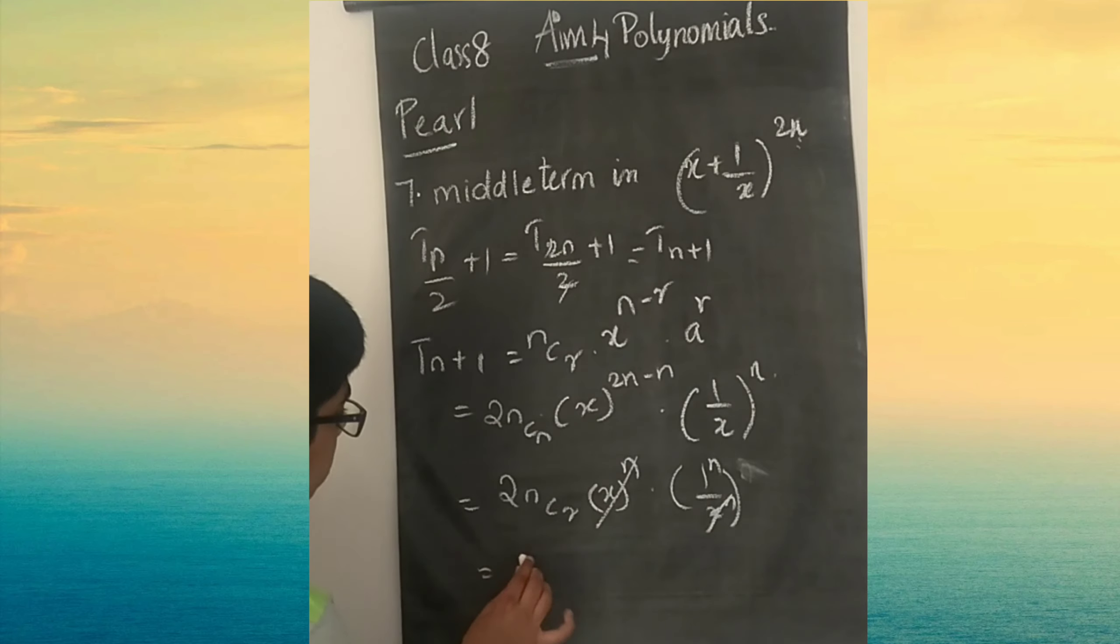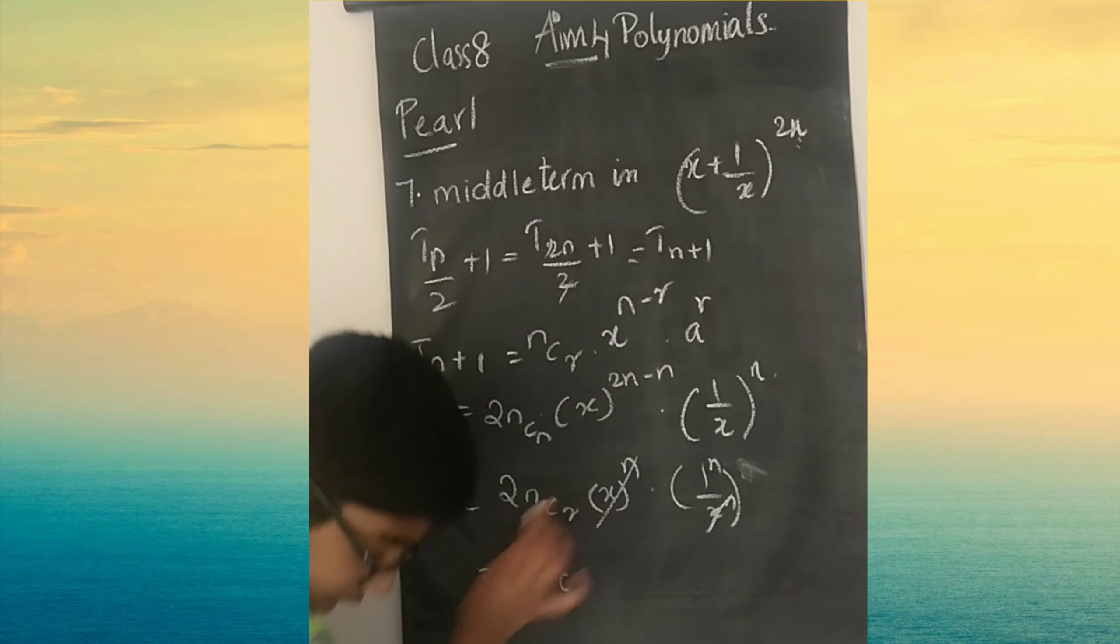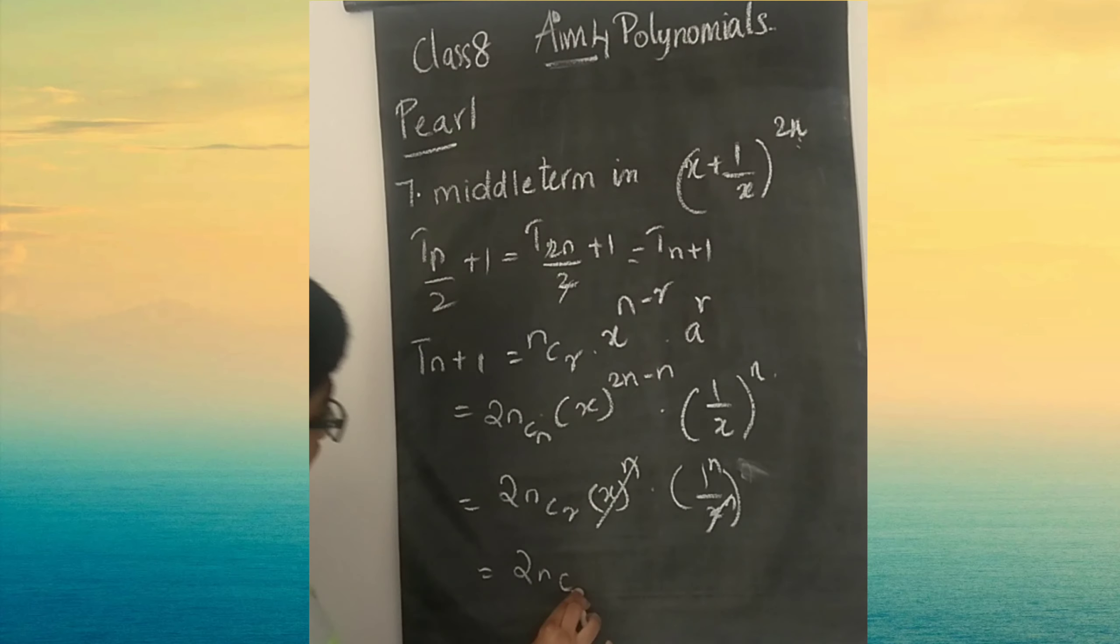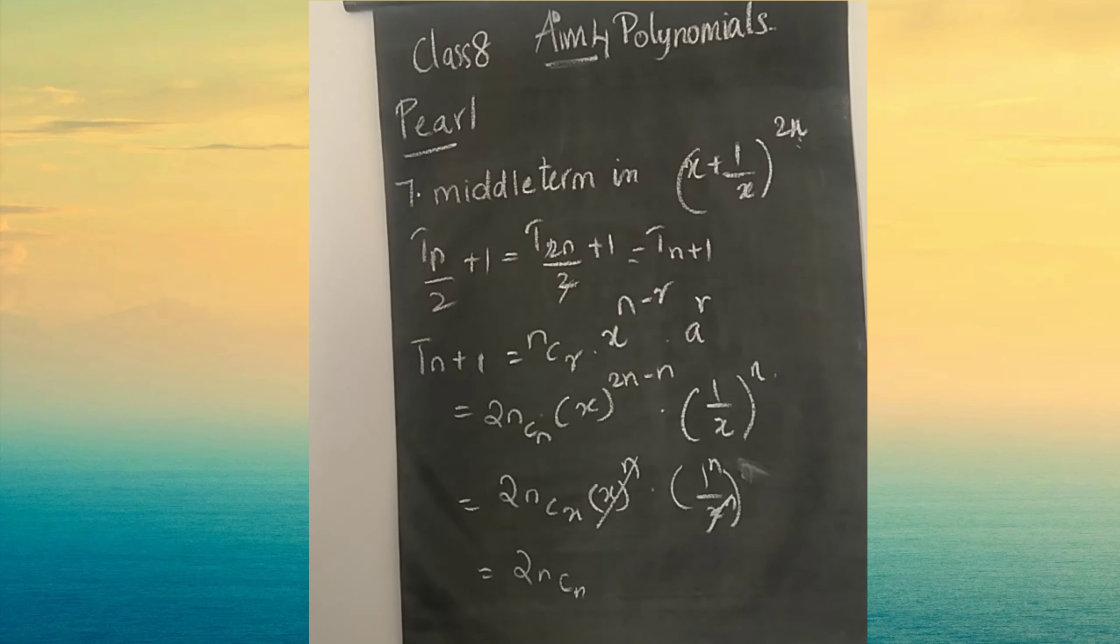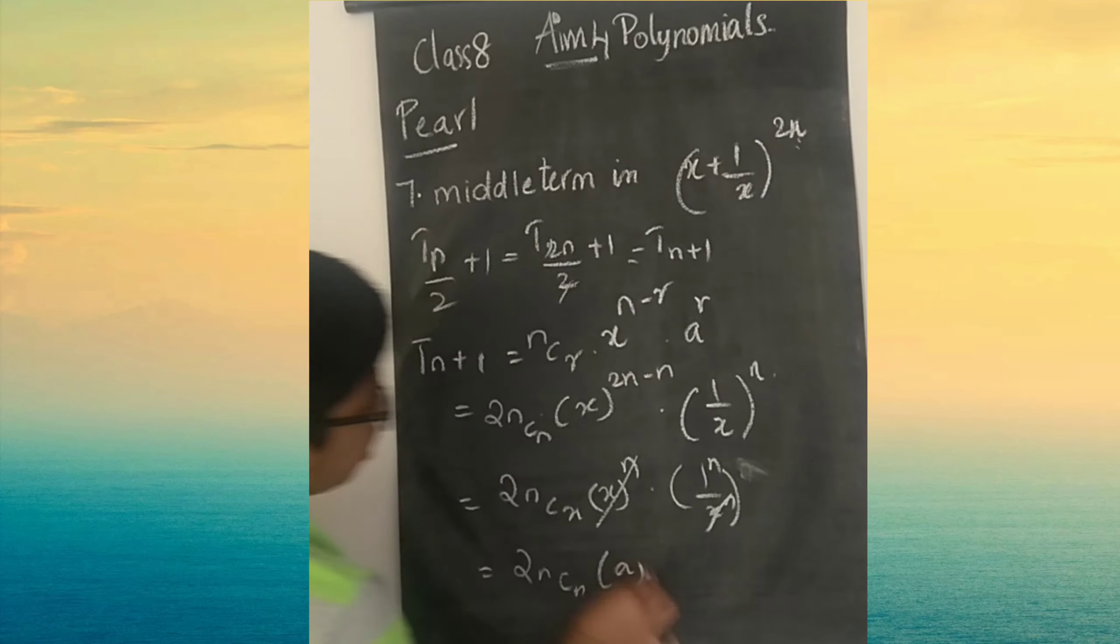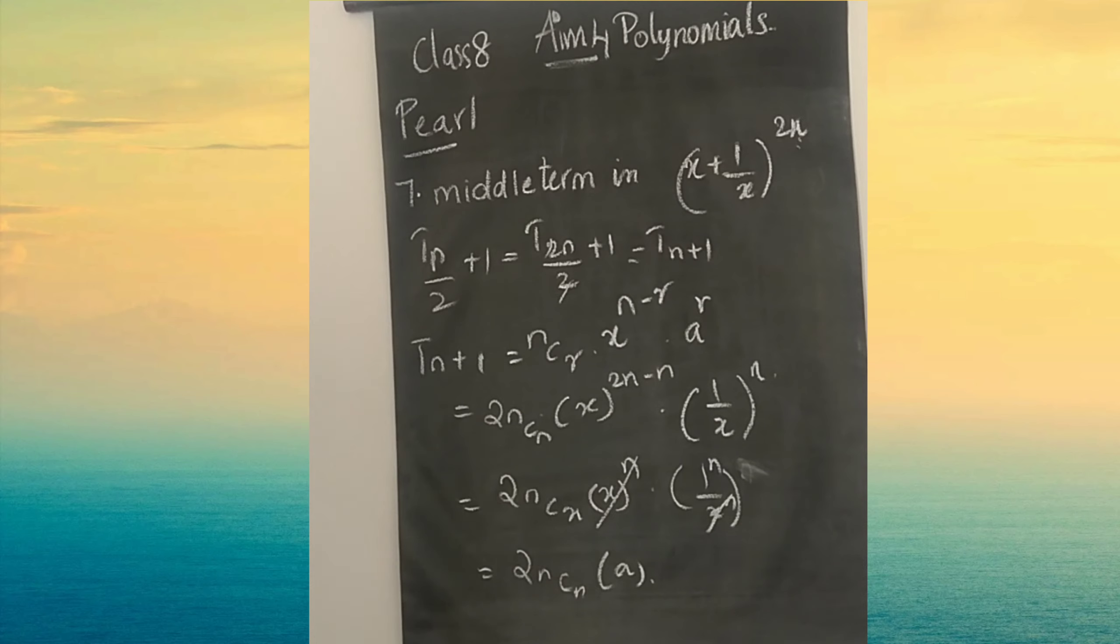2NCN. X power N and 1 by X whole power N can be written as 1 power N into X power N. You can cancel these two. So the answer is 2NCN.